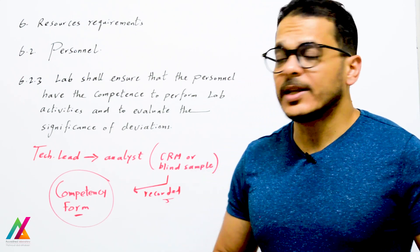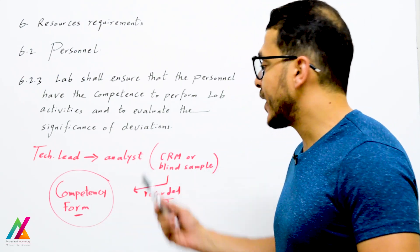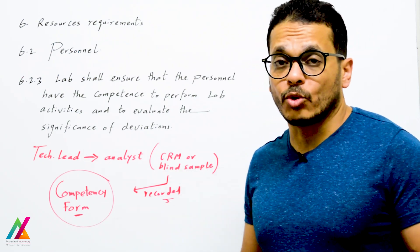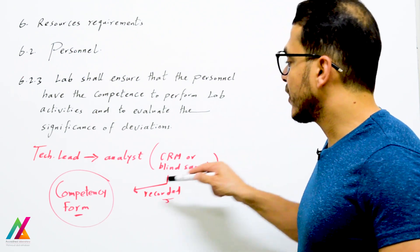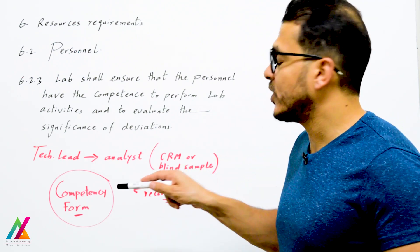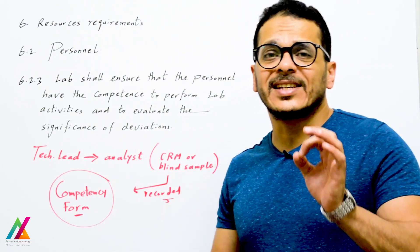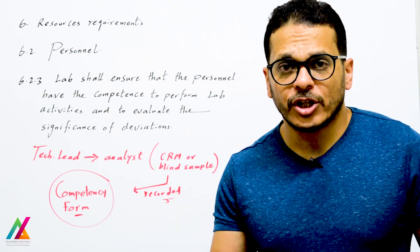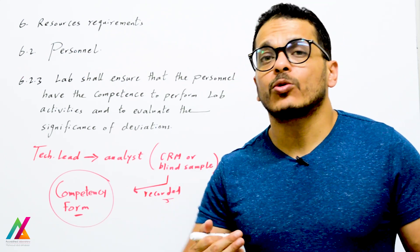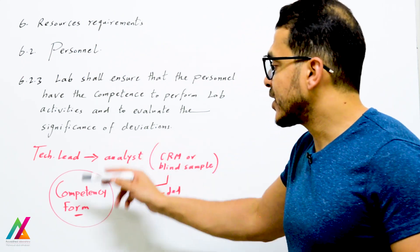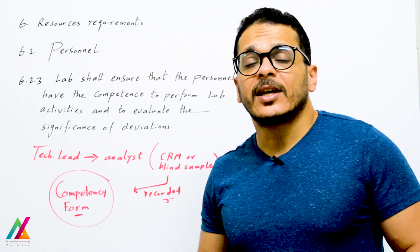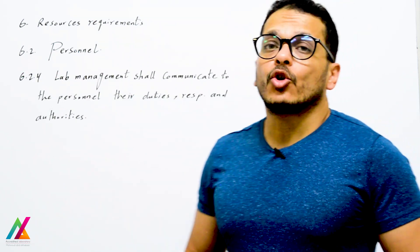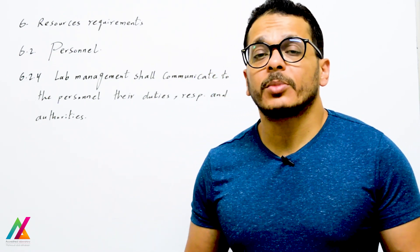Lab management shall not assign duties or responsibilities to personnel before ensuring their competency. To ensure competency technically, each unit will provide the new analyst with a certified reference material (CRM) of known concentration for each parameter, or a blind sample. Results of this test are recorded in a competency test form, and if results are within the acceptable range, the technical lead can authorize the person to perform the lab activity. This competency test shall be repeated every year.